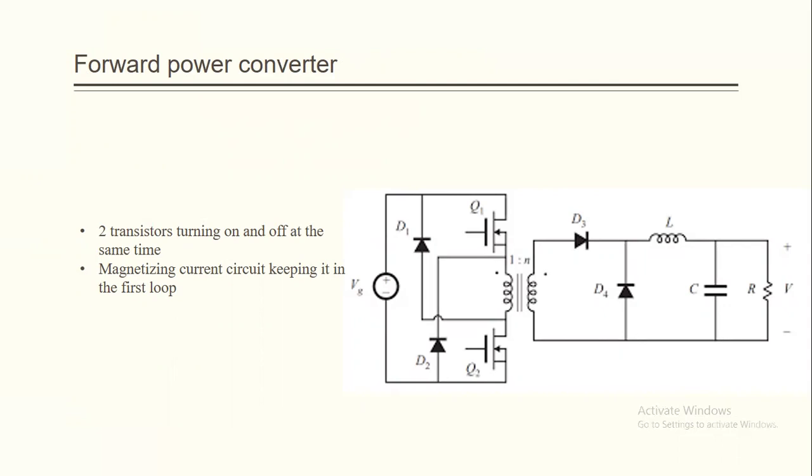Here, D1 and D2 is an internal loop to avoid the magnetizing current that happens in the transformer at the primary winding. When it is off, the current will pass through D1, then through VG, and again to D2. It is to prevent it from going to the other side, the LC filter.